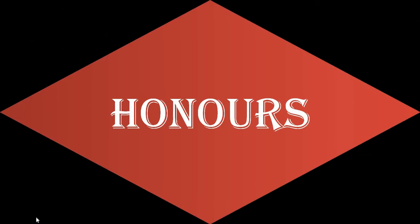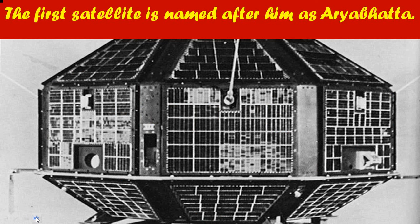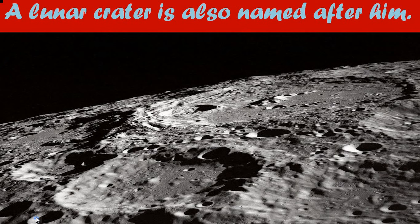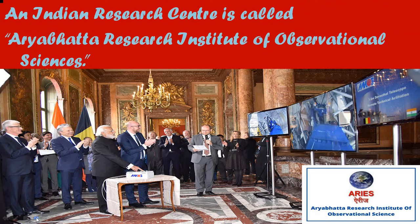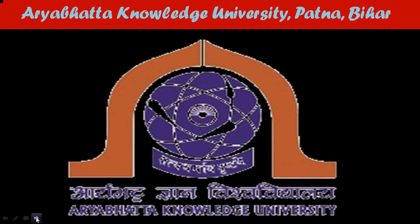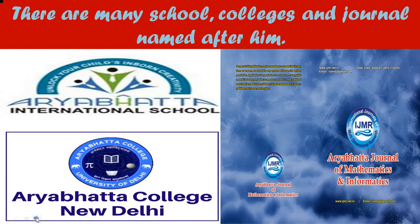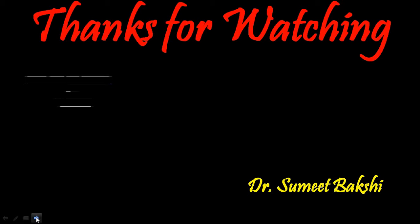Aryabhata is honored in many ways. The first Indian satellite is named after him as Aryabhata. A lunar crater is also named after him. An Indian research center is called the Aryabhata Research Center of Observational Sciences. Aryabhata Knowledge University is located in Patna, Bihar. There are many schools, colleges, and journals named after him. I hope you liked the video. Thanks for watching.